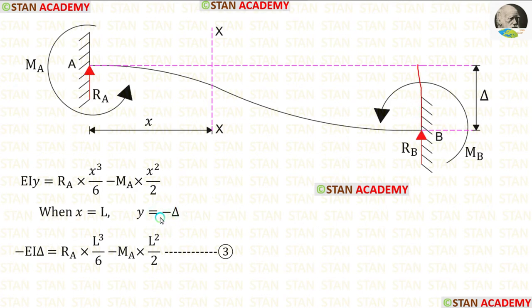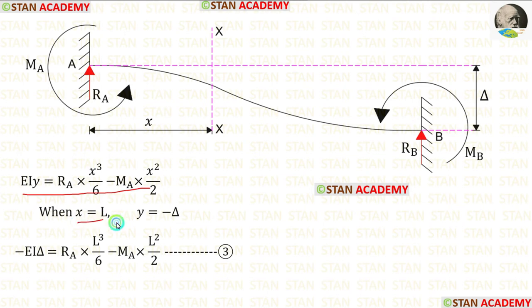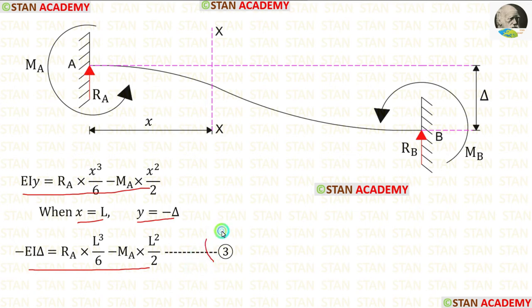Since the support B is sinking downwards, we have to apply a negative sign with delta. In this equation, let us apply x = L and y = minus delta. When we do that, we are getting this. Let us keep this equation as number 3.